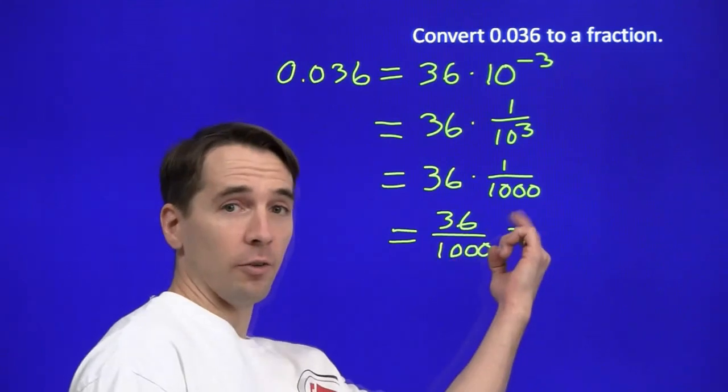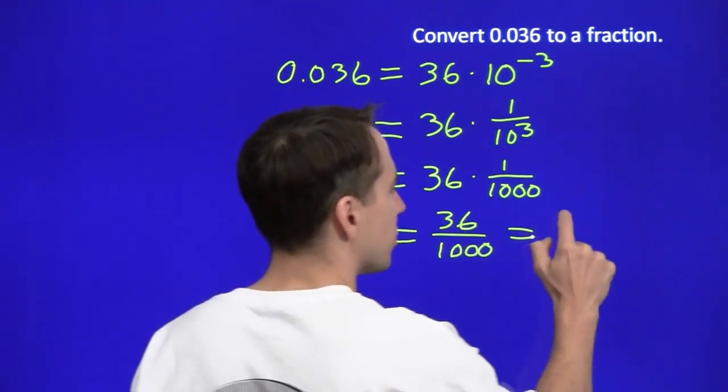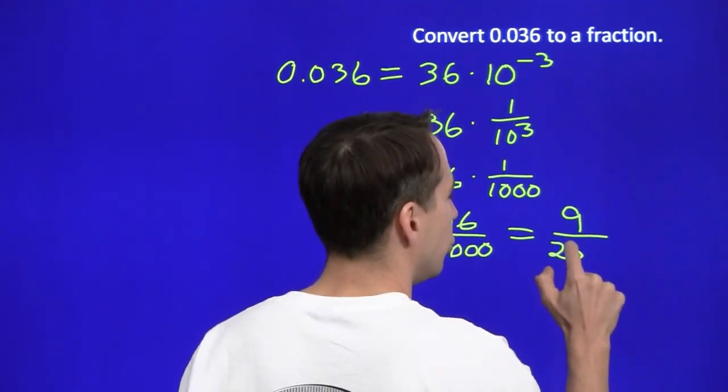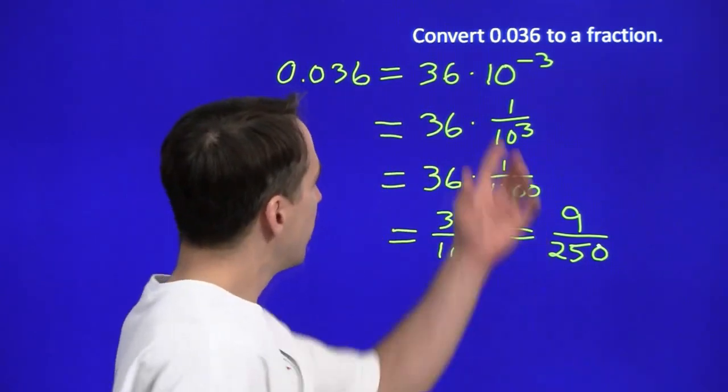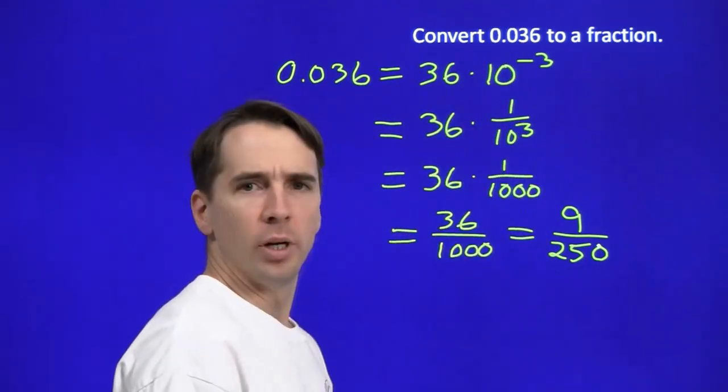Now there's a common factor of 4 in both of these, so we're going to take that out. Take the 4 out of 36, we're left with 9. Take the factor 4 out of 1,000, we're left with 250. So this decimal, 0.036, is 9 over 250. I don't know why we care about that.